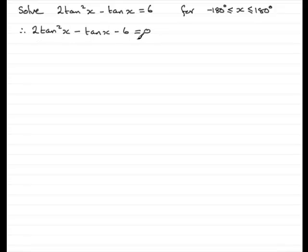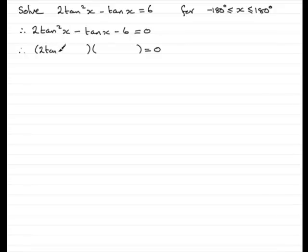Now I have the correct format for a quadratic equation in tan x, so I'll try to factorize it. If you can't factorize, you can use the quadratic formula where tan x equals minus b plus or minus the root of b² minus 4ac, all over 2a. But this one does factorize: it becomes (2tan x + 3)(tan x - 2). Checking: 2tan²x, then minus 4tan x plus 3tan x gives minus tan x, and 3 times minus 2 gives minus 6.